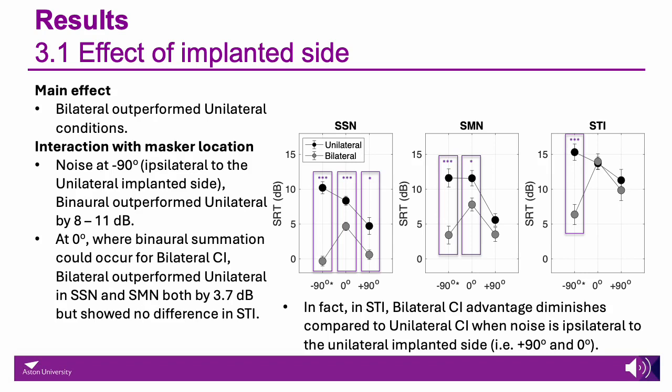Overall, the bilateral cochlear implant outperformed the unilateral condition, but results also depended on the type of noise used. For steady-state or speech-modulated noise, the bilateral benefit is more obvious, especially when the noise is either co-located with the speech or on the same side as the implanted ear of the unilateral condition. However, this difference is slightly less obvious when the noise is located on the contralateral side of the unilateral implanted ear. Additionally, in the single talker interferer condition, the binaural summation effect from the bilateral cochlear implant seems to be diminished.